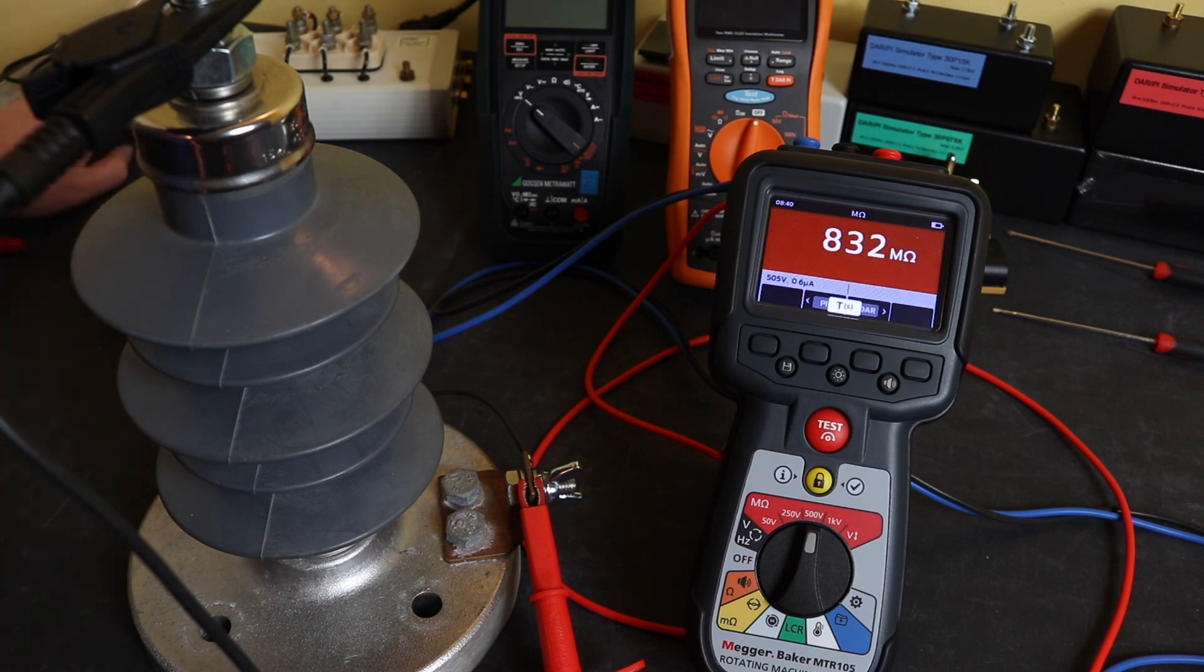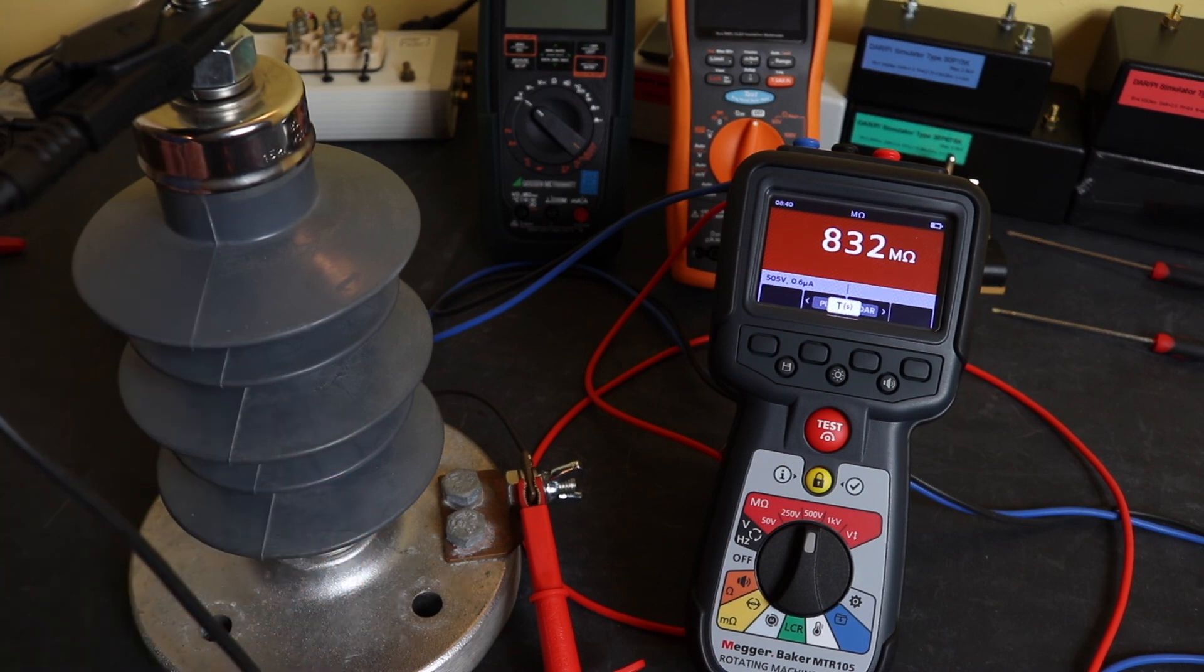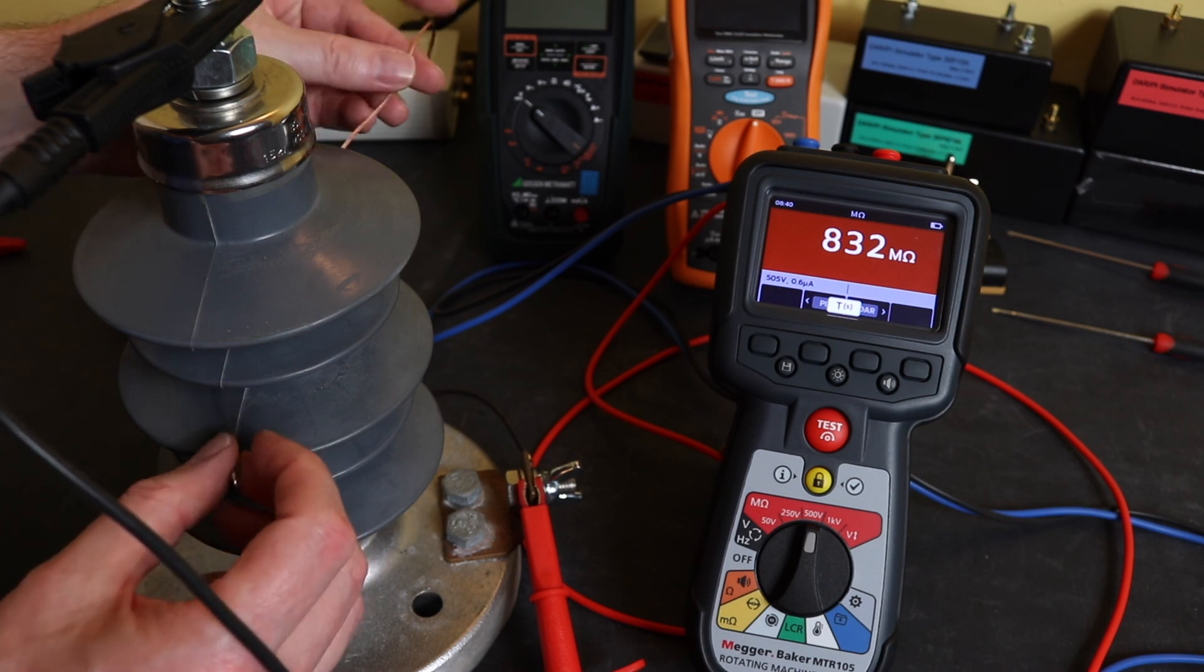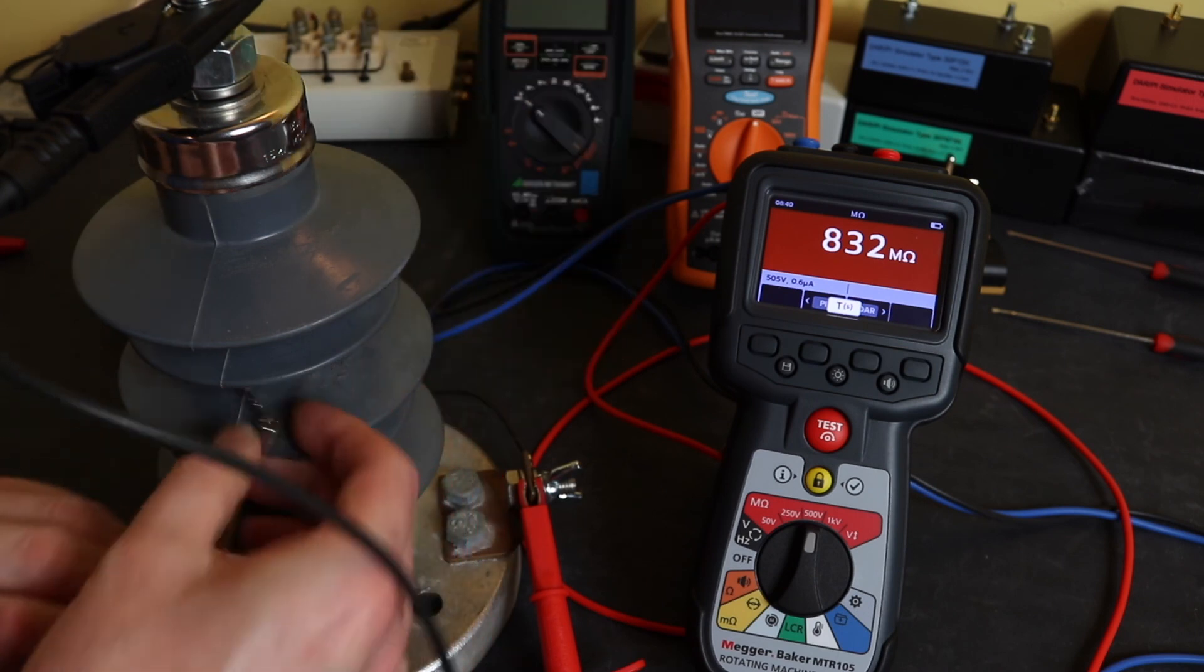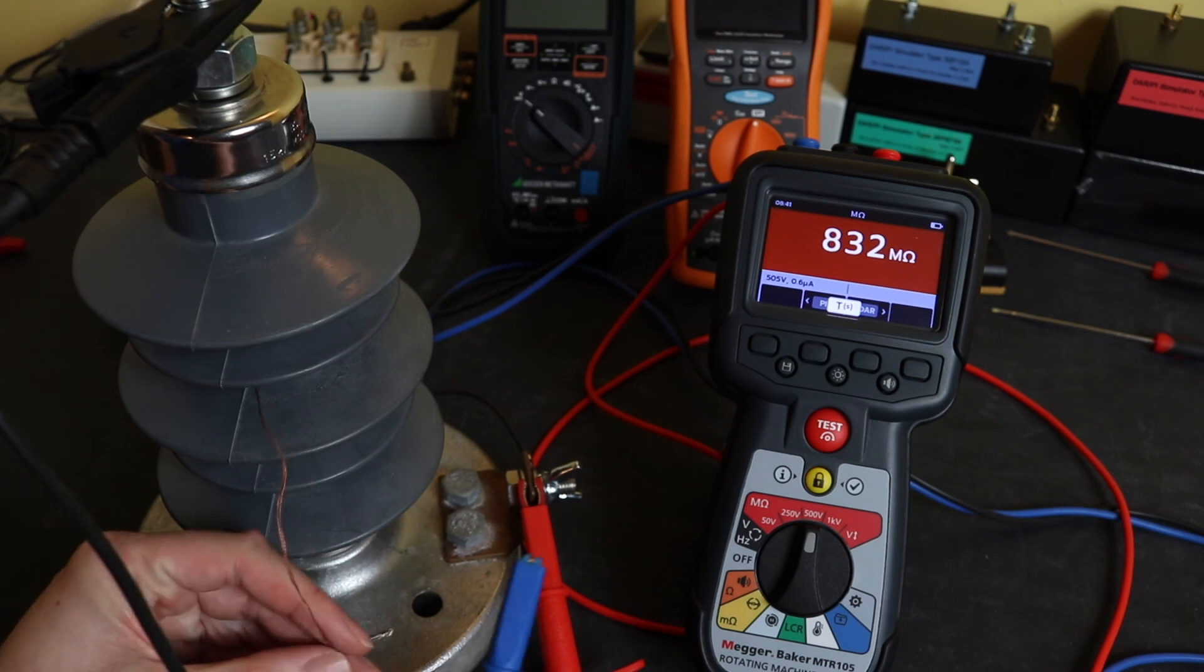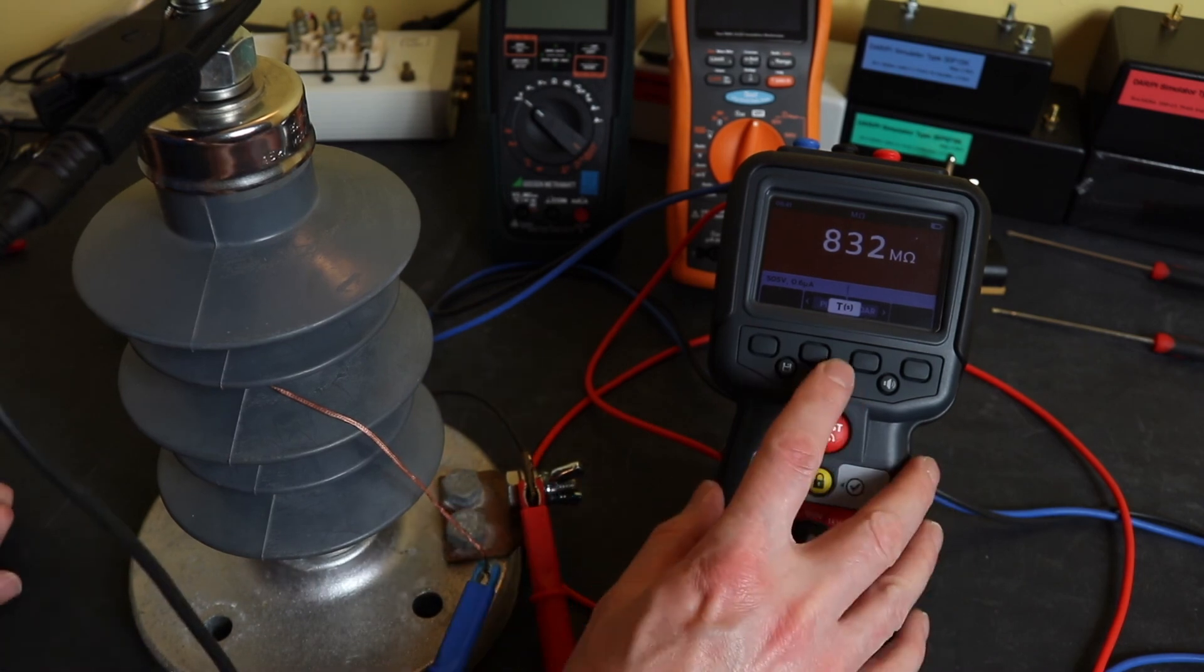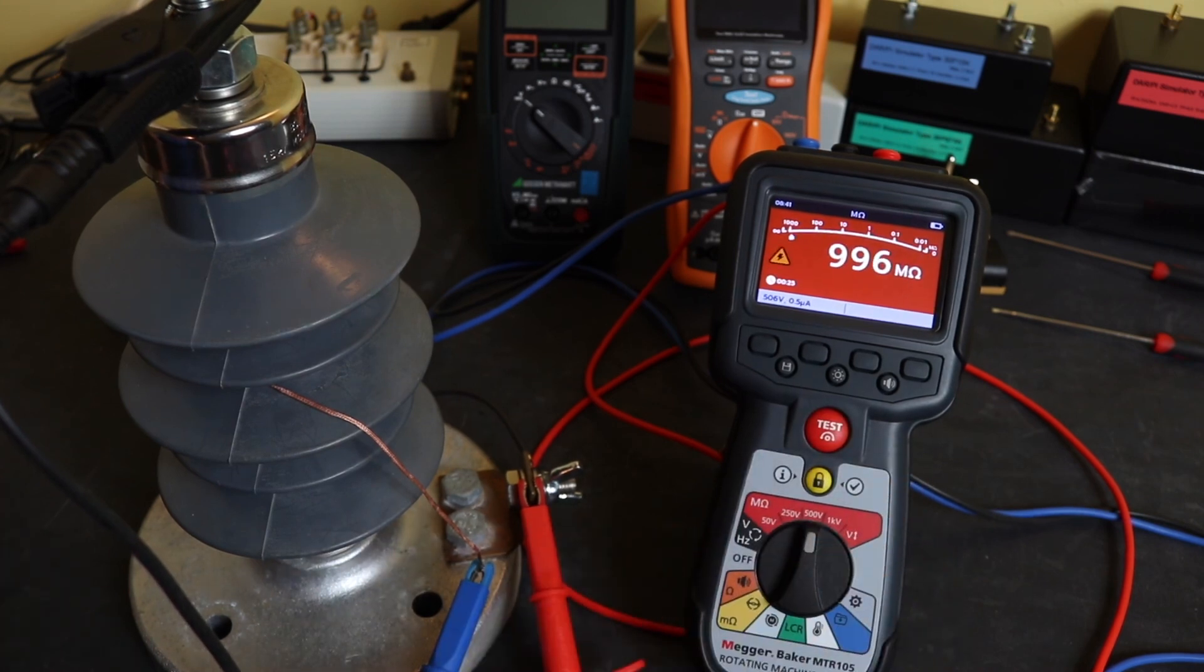There's my final reading. Now what the guard terminal allows me to do is to capture the leakage over the surface of this bushing and remove it from the insulation test reading. To do this we have these little conductive collars. We wrap them around the bushing through there and then clamp the guard terminal here onto this conductive collar. I'll leave him there and repeat the test again. This time we should be back up to our original resistance reading of 995, 996 megaohms.